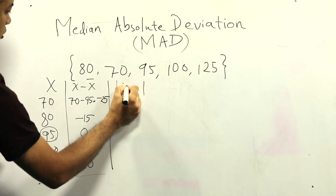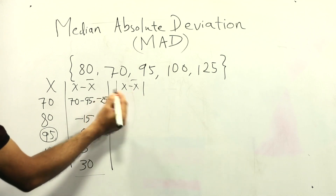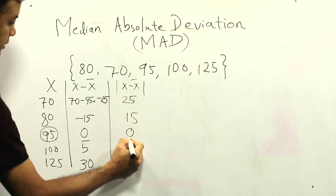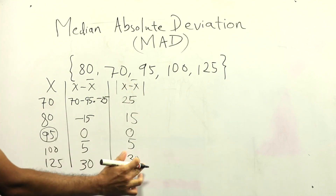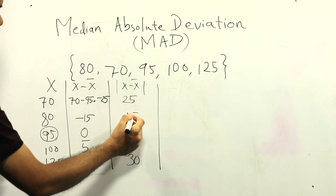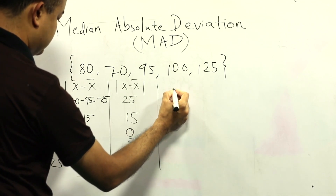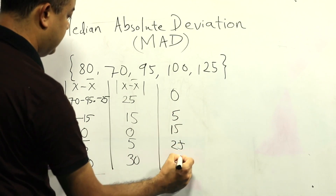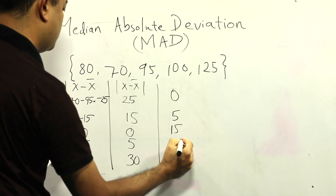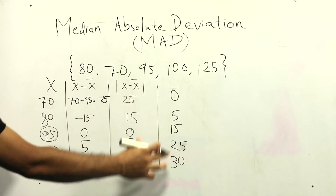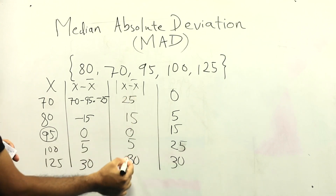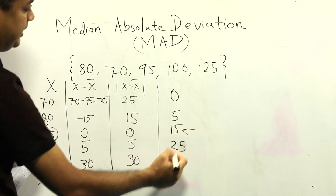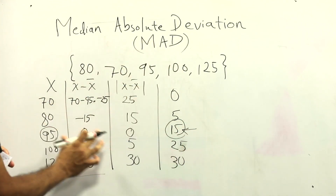Taking the absolute values of the deviations gives: 25, 15, 0, 5, 30. These are not yet in order, so we sort them in ascending order: 0, 5, 15, 25, 30. The final step is to take the median of this sorted list. Since there are five values, the middle value is 15. Therefore, the median absolute deviation of this data set is 15.